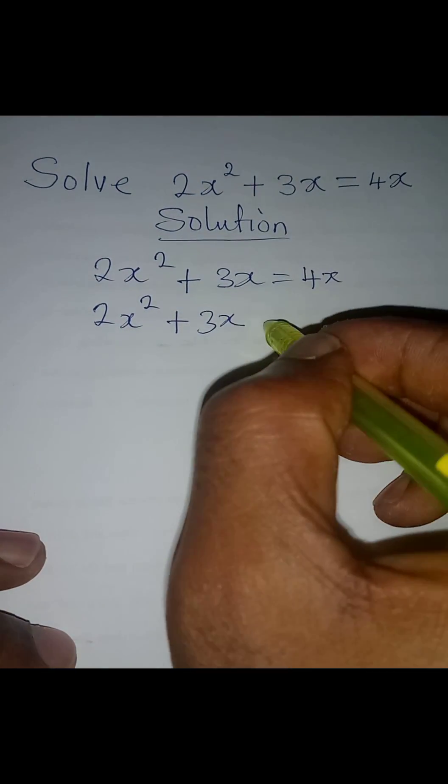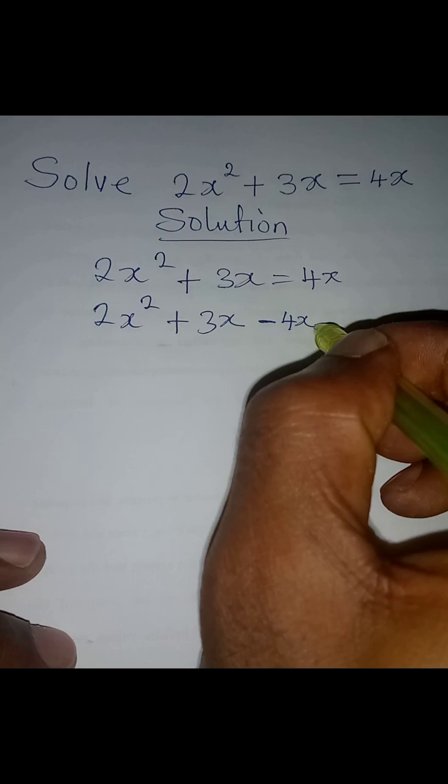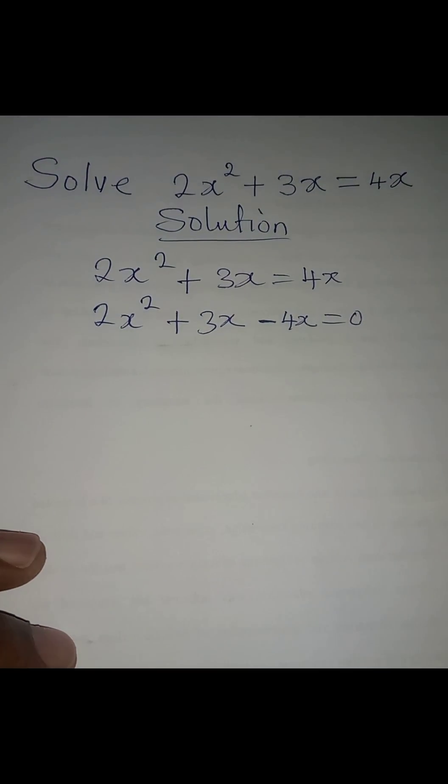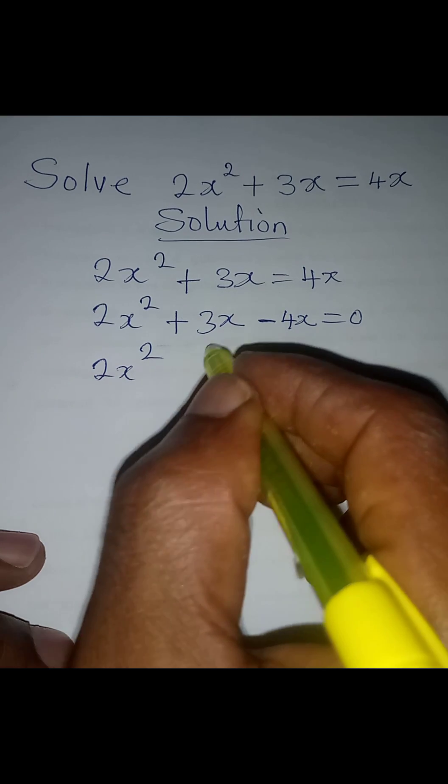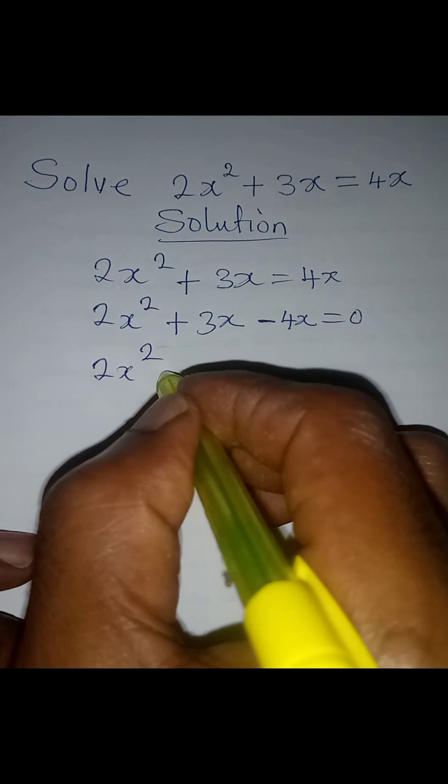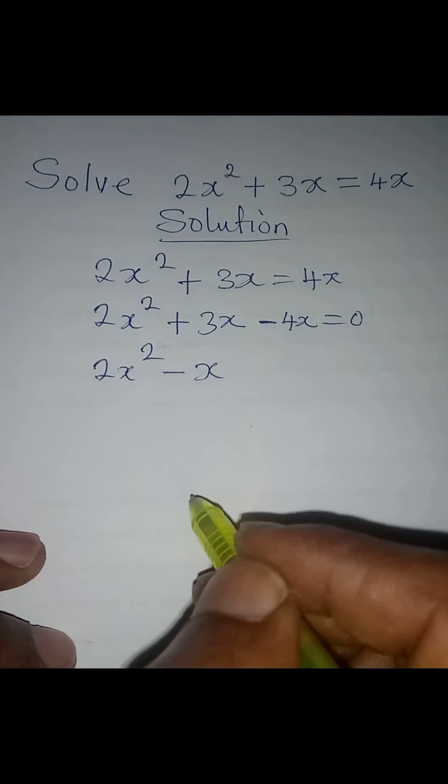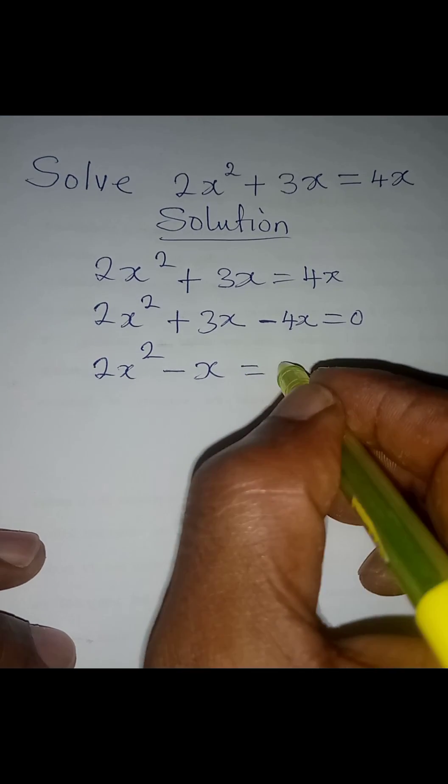4x comes here to become -4x, everything equals zero. This is the same as 2x² + 3x - 4x, which gives us -x, equal to zero. So we have 2x² - x = 0.